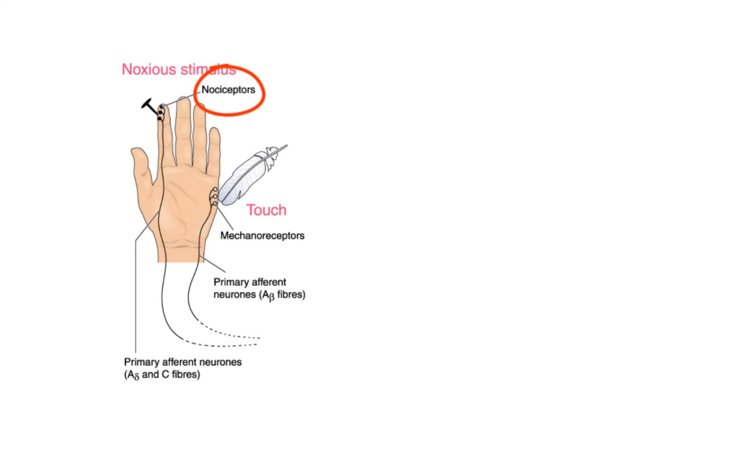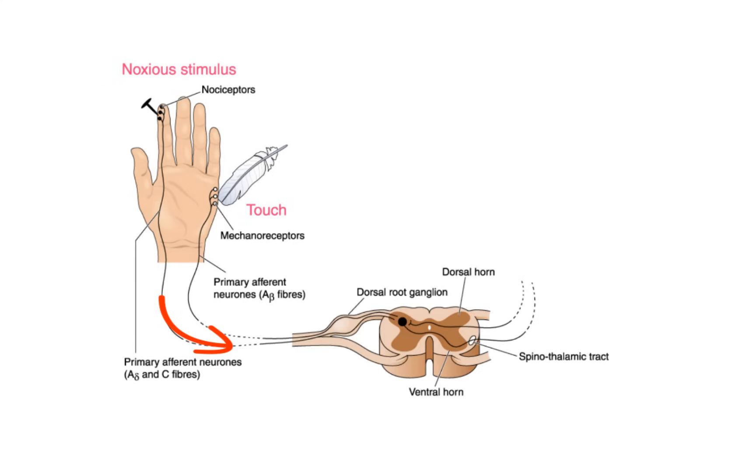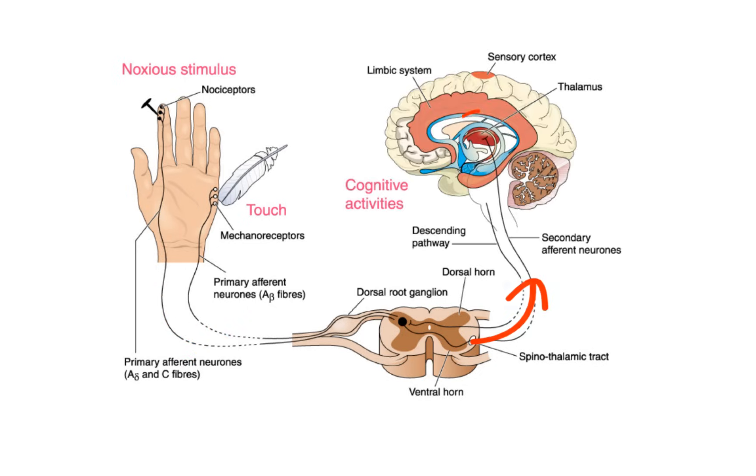So pain begins at the nociceptors, which are simply the branching ends of sensory neurons found within the peripheral nervous system. These high-threshold primary sensory neurons respond to damage to the body by transmitting the painful stimulus to the second-order neurons in the dorsal horn of the spinal cord. From there, the signal is carried through the spinothalamic tract to the thalamus and then to the somatosensory cortex where pain is perceived.